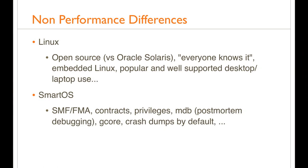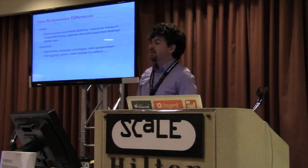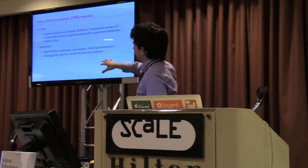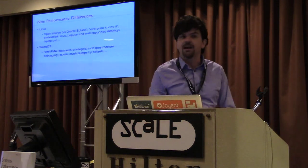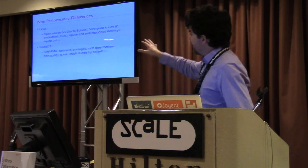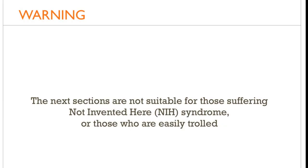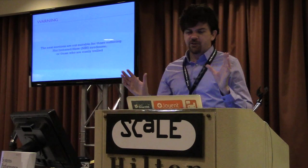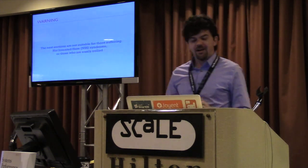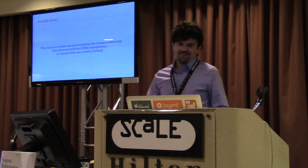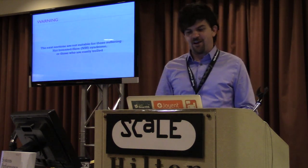I'm not covering non-performance differences in this talk, but one big difference between Linux and Oracle Solaris is that Linux is open source and Oracle Solaris currently isn't. For SmartOS, SMF and FMA (fault management architecture) are great for highly available systems, post-mortem debugging, and crash dumps by default. So the systems do differ, and there are quick specific differences between Linux and SmartOS. The next section covers what one can learn from the other.